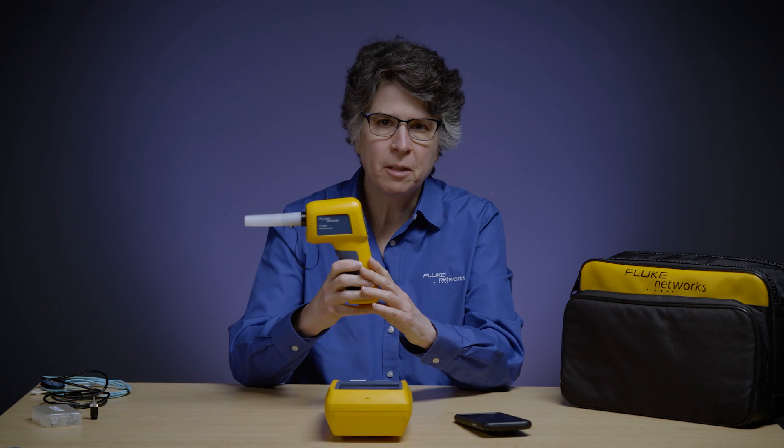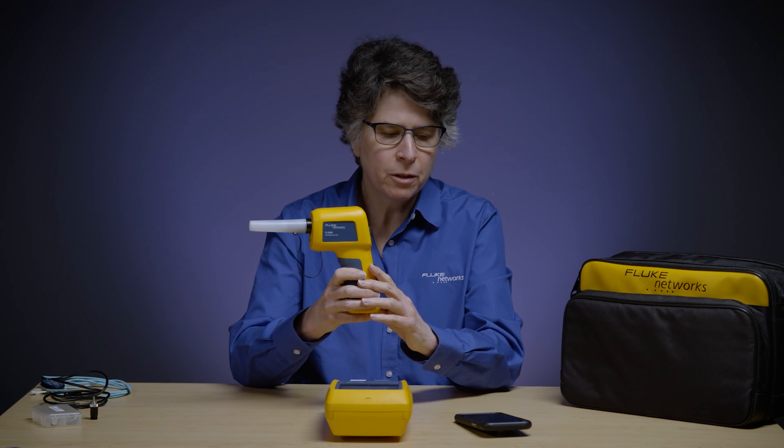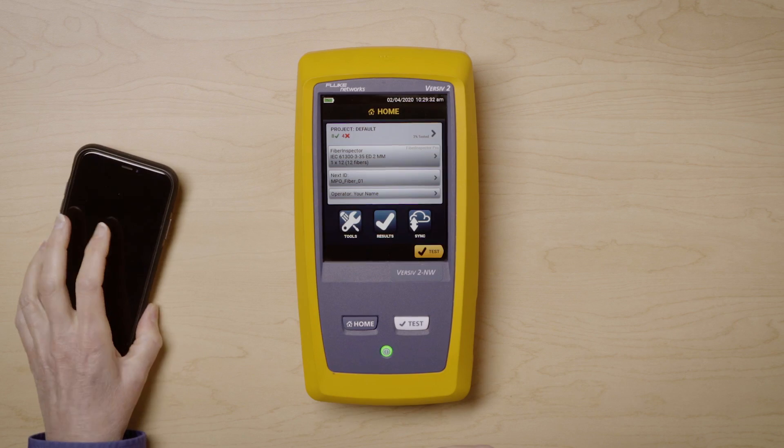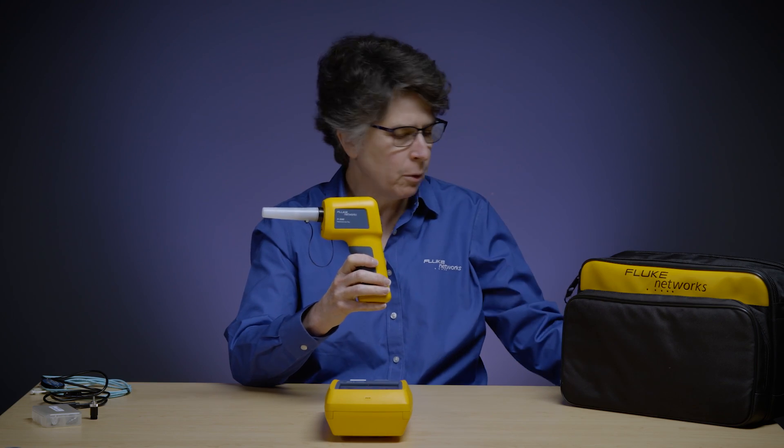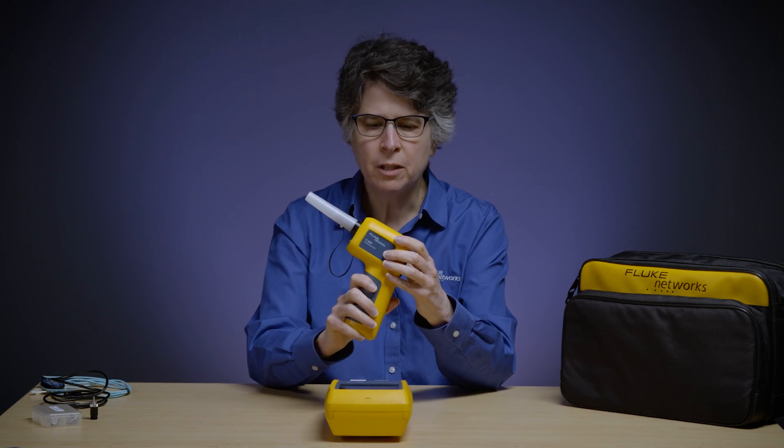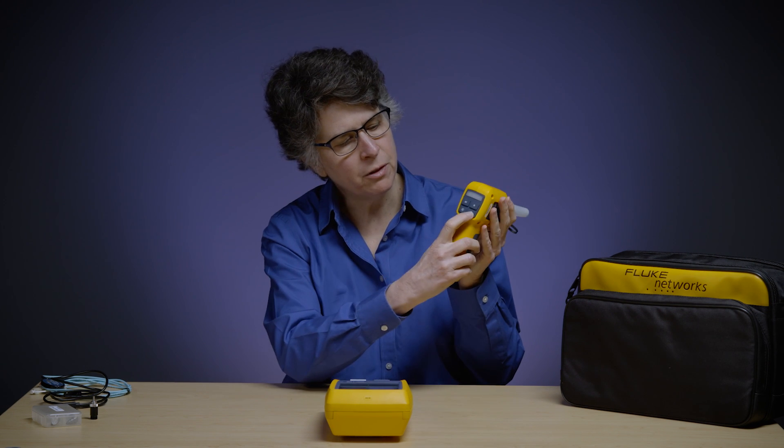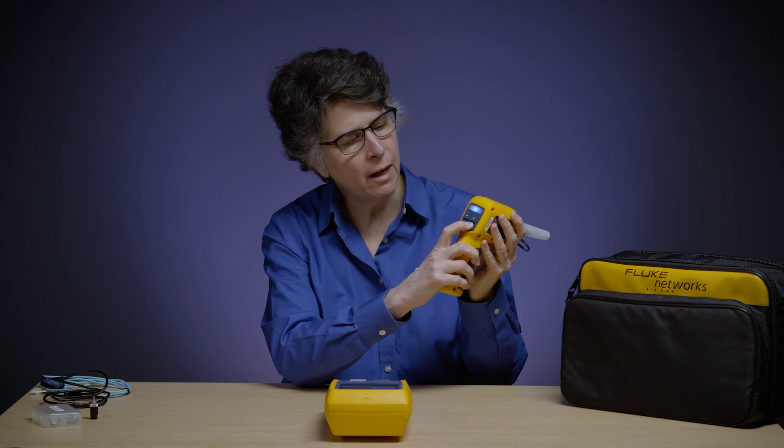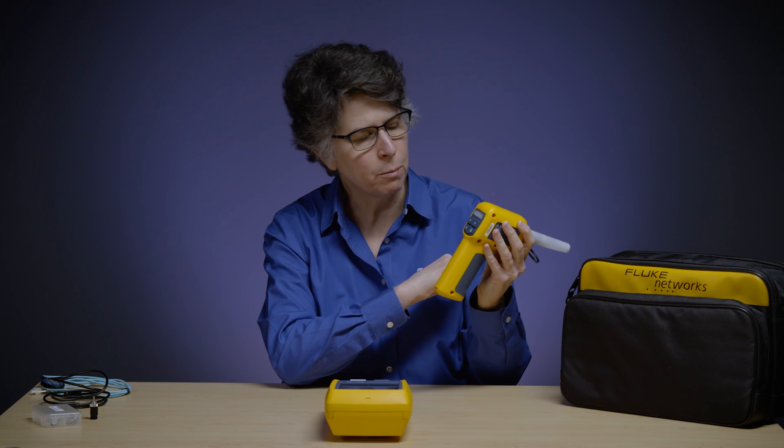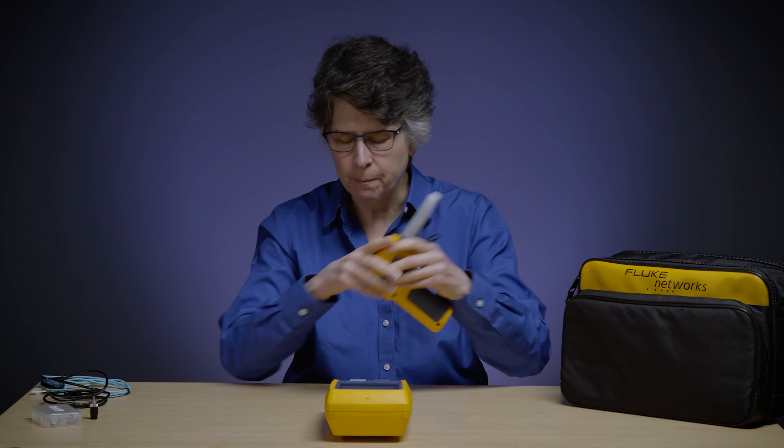Now the nice thing about the Fiber Inspector Ultra is it works with both mobile devices and Versive. Today we're going to focus on Versive so I'm going to put my mobile device away. The first thing you need to do is turn on your camera by pressing the on switch on the back and when it's on you'll see that a little blue light comes on and starts blinking. That means you're on.